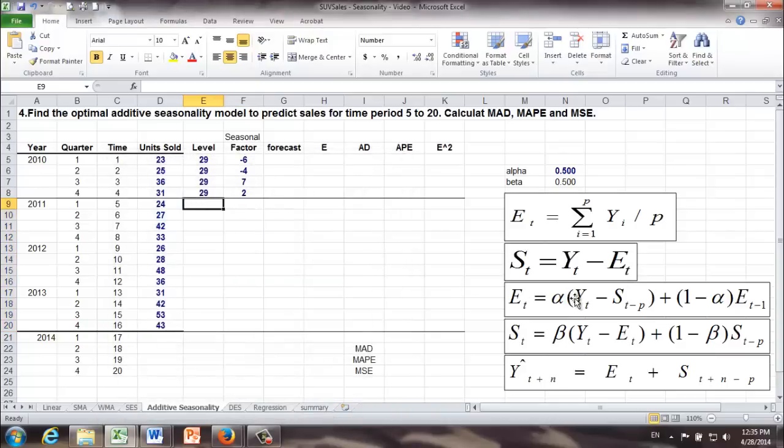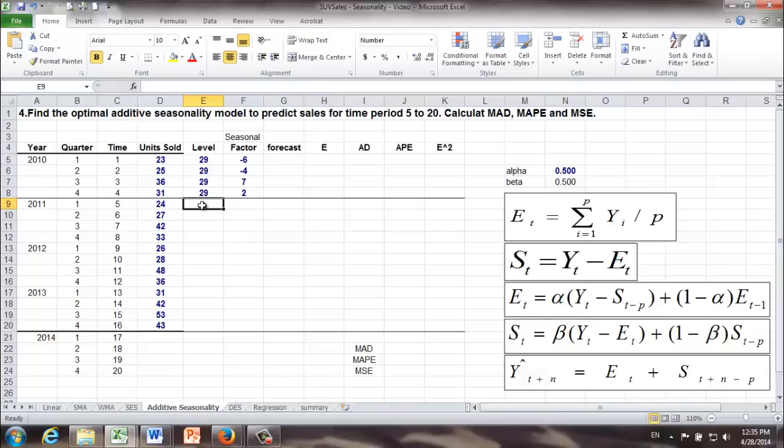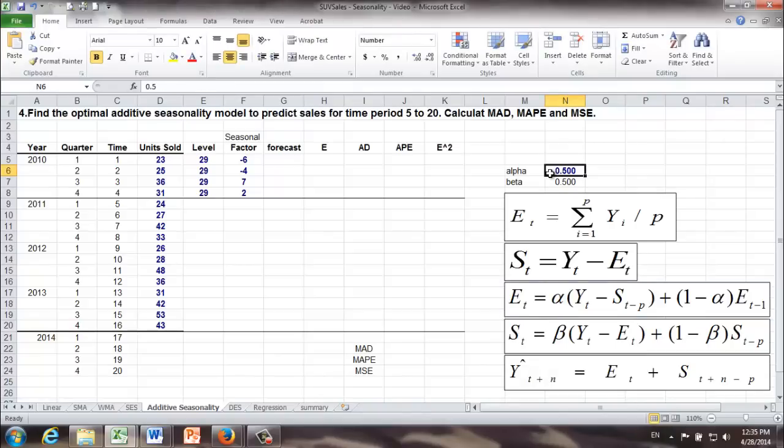Now we are ready to use the regular formula for level to calculate the first one. Actually, in this case, it will be the level for time period 5. How are we going to do that? We are going to use this formula. In this formula, we have a parameter called alpha. Once again, we don't know what alpha value will be. So for convenience, we pick 0.5. If you want to pick 0.6, go ahead. In the end, we are going to use Solver again to find the optimal values for alpha and beta later on.